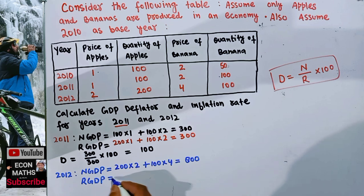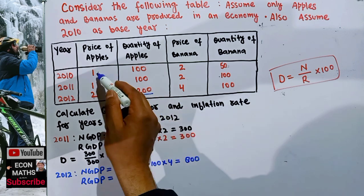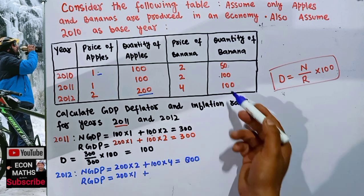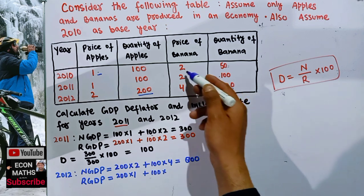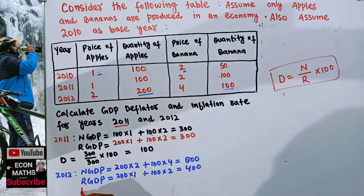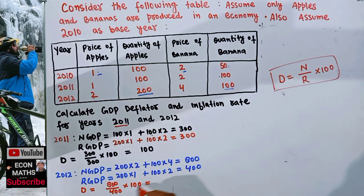The real GDP for 2012 is calculated by multiplying the current year quantity by base year prices. Current quantity of apples is 200 times base year price of 1, plus current quantity of bananas 100 times base year price of 2 — that is 200 plus 200, which equals 400. So the GDP deflator for 2012 equals 800 divided by 400, times 100, which is 200.